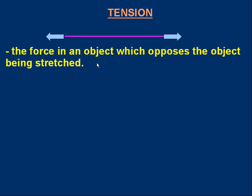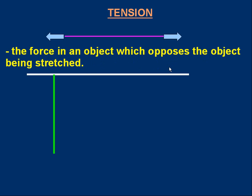Let's look at that in a bit more detail. There's a ceiling — the white line. Let's hang a string from the ceiling; that's a green string. And put a weight on the end of the string, so we've got a 100 newton weight hanging on the string. Let's assume the string itself has negligible weight to keep it nice and simple. The string will be taut and there will be tension in it stopping it stretching.